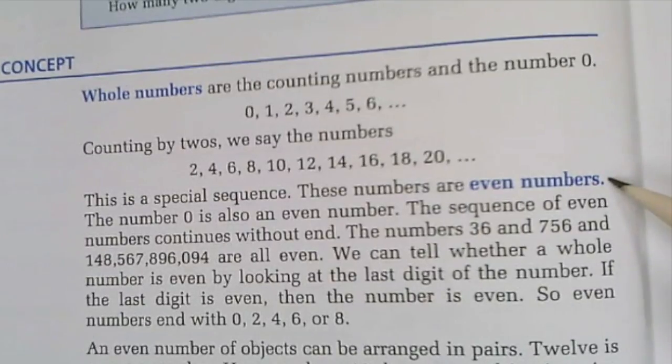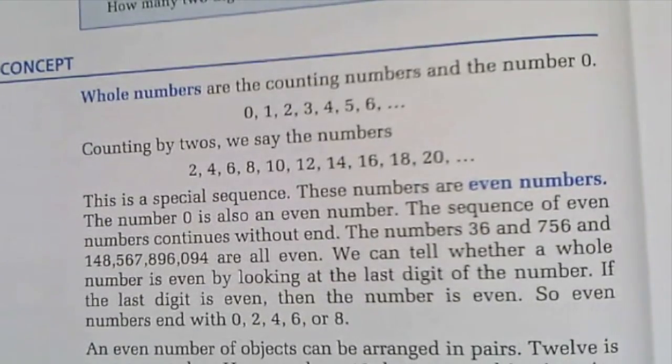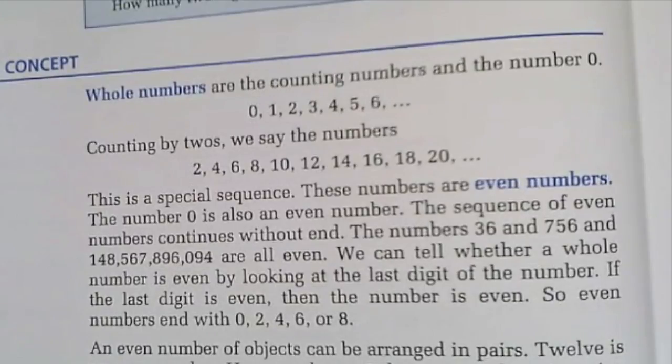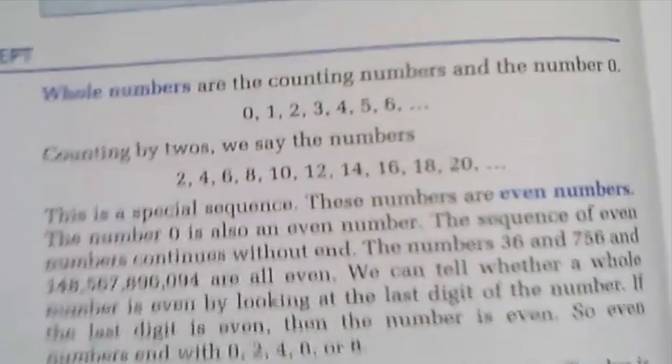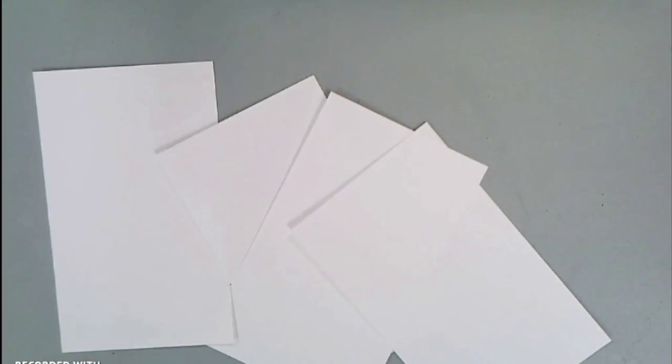Good, they're even numbers. Even numbers end in a 0, 2, 4, 6, or an 8, and they all have a partner. Let's check that out. Four index cards here, and I want to know whether it's even or it's odd.